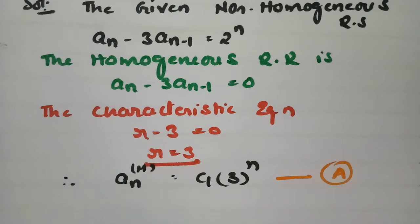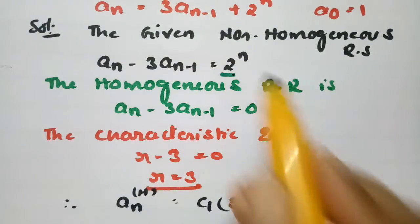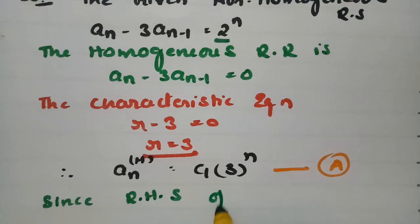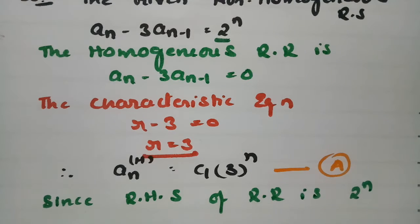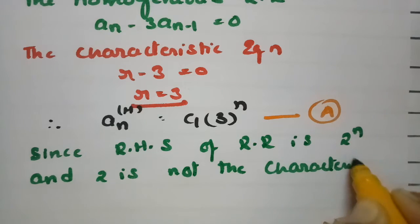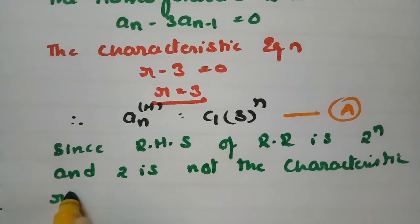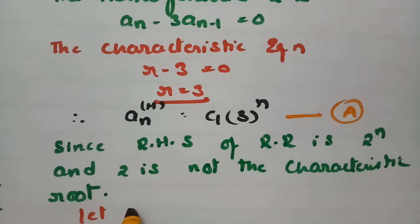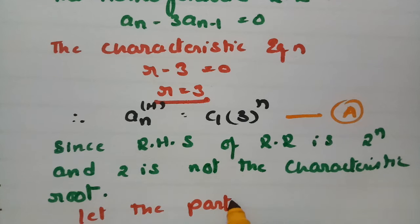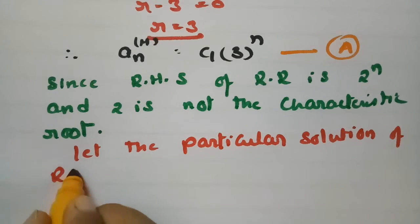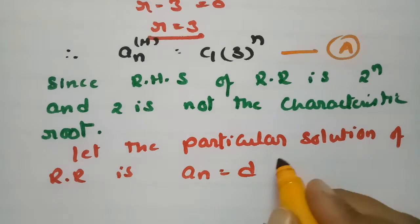For the particular solution: since the right-hand side of the recurrence relation is 2^n, and 2 is not the characteristic root (the characteristic root is 3), we let the particular solution be a_n(p) = d·2^n.